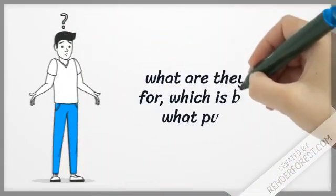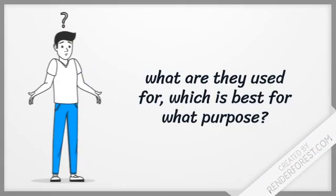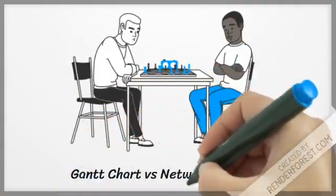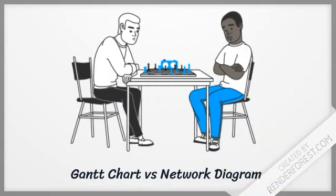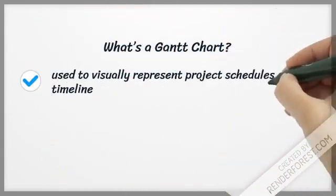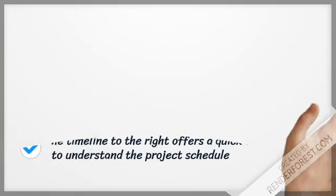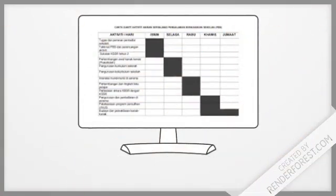What are they used for? Which is best for what purpose? A Gantt chart is used to visually represent a project schedule on a timeline. On the left side, in a traditional spreadsheet fashion, the timeline on the right offers a quick and easy way to understand the project schedule. This is an example of a Gantt chart.